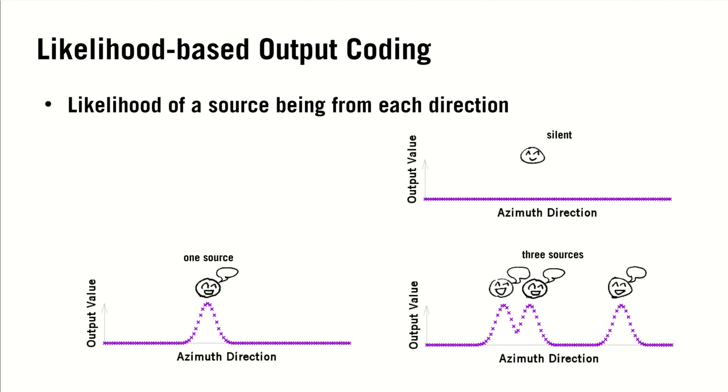For the network output, we propose the likelihood-based coding. That is, the network outputs the likelihood value of a source being from each individual direction. During training, the ideal output is the maximum of Gaussian-like functions around the ground truth directions of arrival. And during application, like spatial spectrums, we decode the output by finding the peaks as the predictions. Such output coding allows the detection of an arbitrary number of sources.